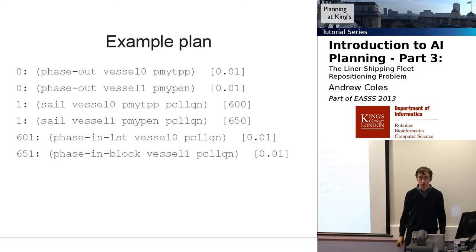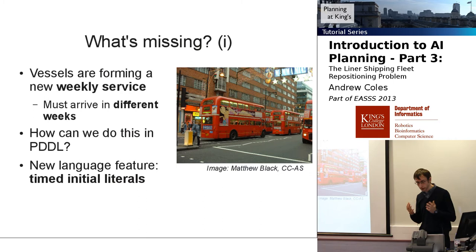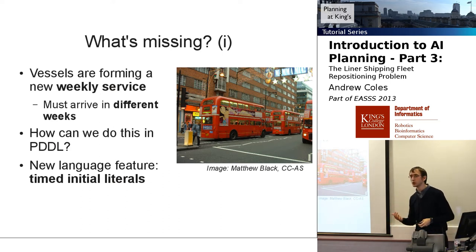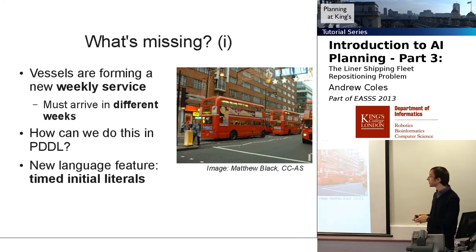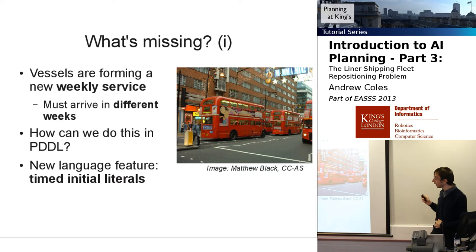What's missing? Well, there's a saying in London that buses come in threes. We have the same issue with vessels — we're trying to set up a new weekly service. At some point in the week, one of our vessels will arrive on the scheduled service going A to B to C to D to E to F and back to A. We need to guarantee that to our customers. If all vessels arrive in the same week, we haven't provided that guarantee — they've all arrived at once with nothing coming the next week. So all vessels must phase in, but not in the same week. How can we do this in PDDL?